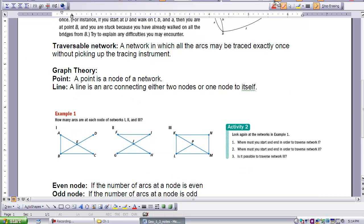I want you to take a look at example one here. I want you to just simply identify how many arcs are at each of our nodes in networks one, two, and three. Stop the video to do this, and when you are finished, start the video again.